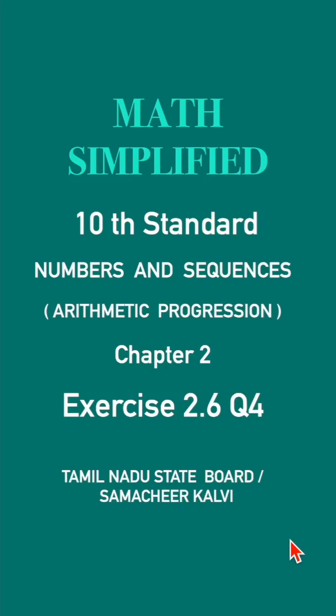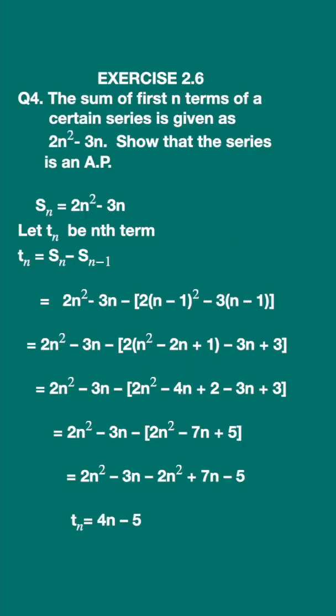Exercise 2.6 question 4, click here for the full exercise. The sum of the first n terms of a certain series is given as 2n square minus 3n. Show that the series is an arithmetic progression.